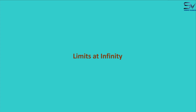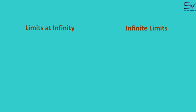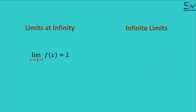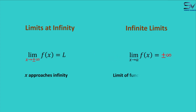So what is the difference between limits at infinity and infinite limits? In limits at infinity, x approaches infinity. Whereas in infinite limits, the limit of a function is found to be infinite when x approaches a finite value. This is the difference between these two.